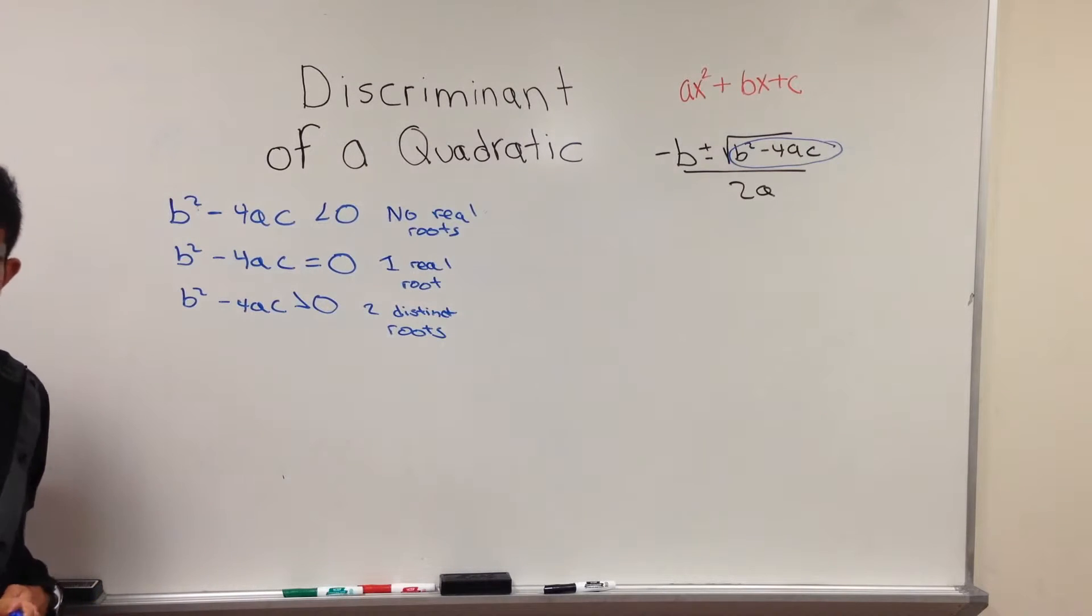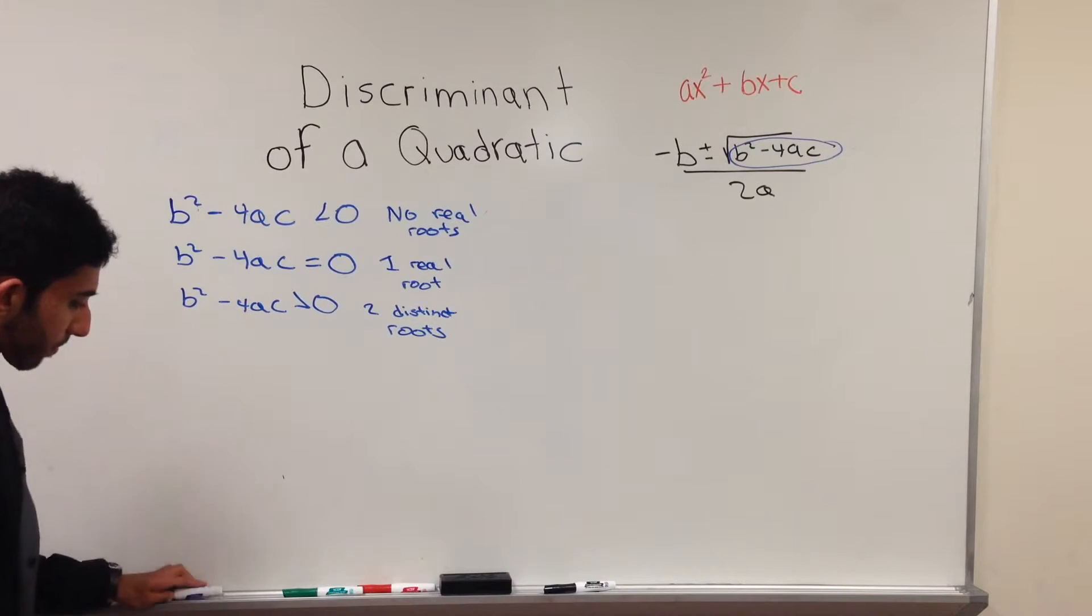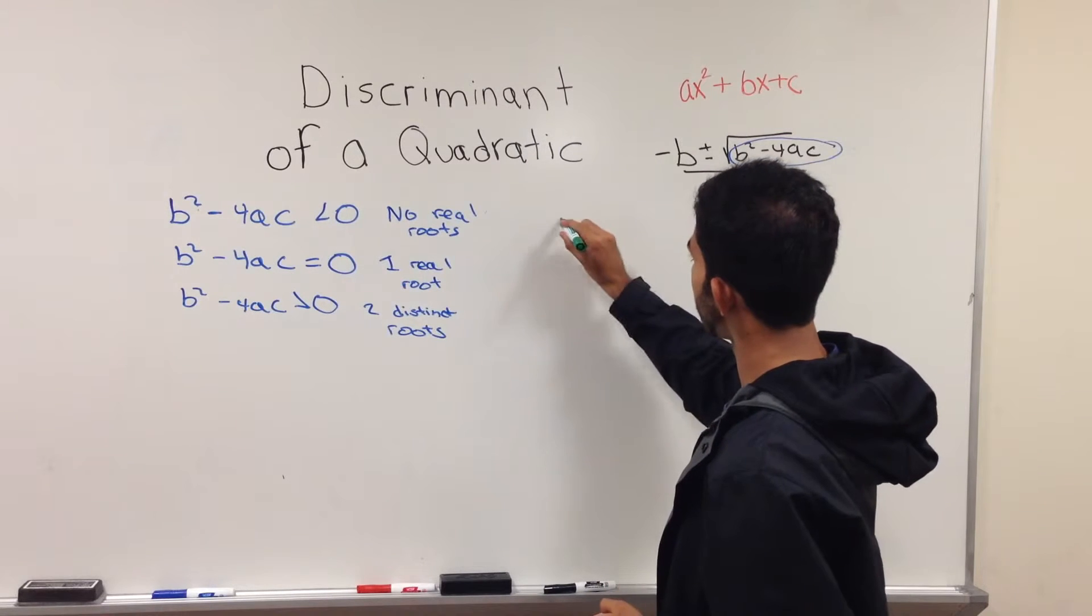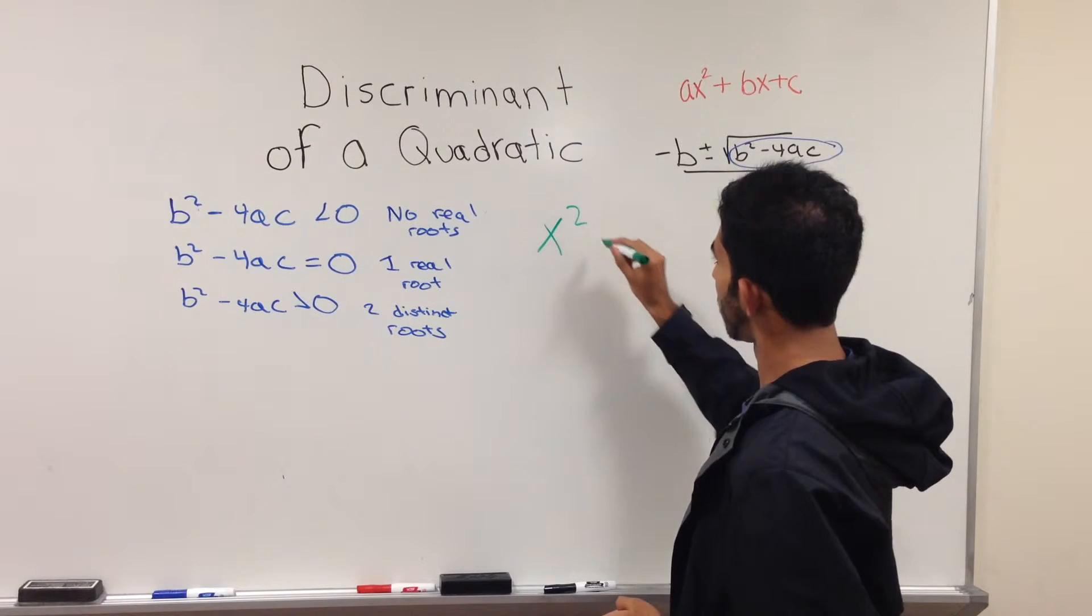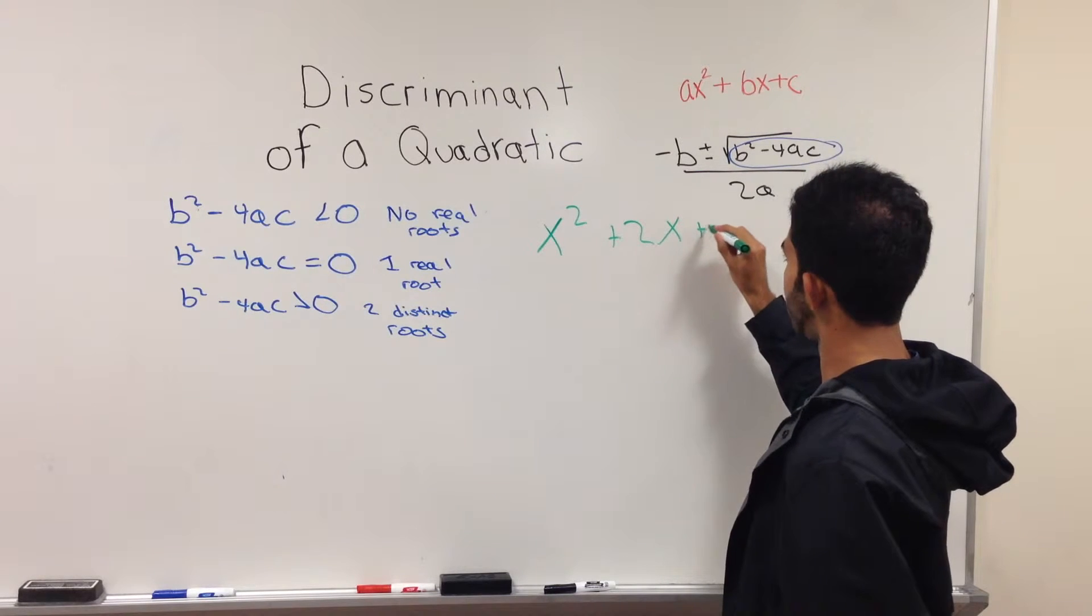Now I will show you an example of how the discriminant works and how you can find the number of real roots. My first problem is x² + 2x + 3.